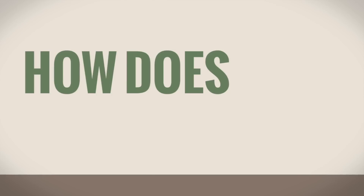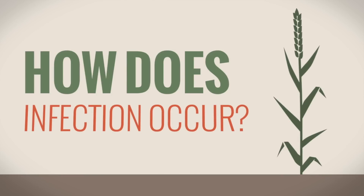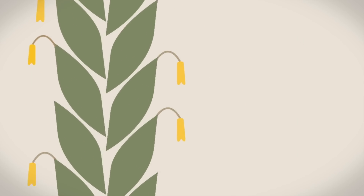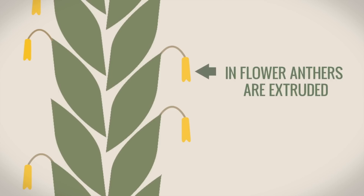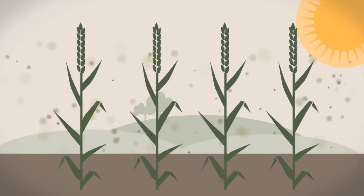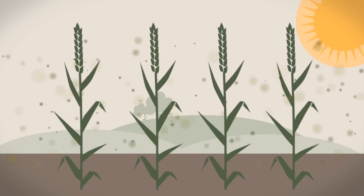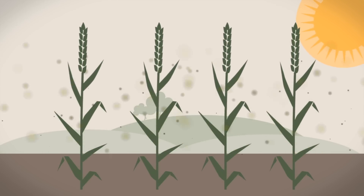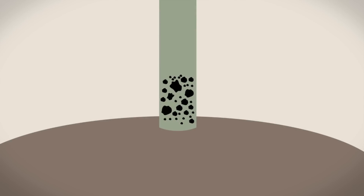How does infection occur? Infection occurs when the disease is in contact with the ear of the plant when the plant is in flower and the anthers are extruded. Fusarium Graminearum and Microdocium use warm, wet, humid periods to release wind-borne ascospores which travel through the crop. Rain splash events can also be responsible for the transfer of Fusarium Culmorum and Microdocium inoculum to the ear.